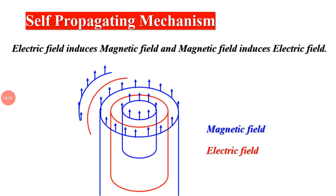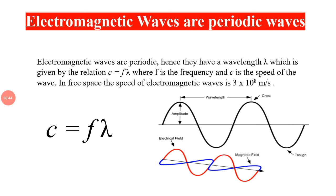So electromagnetic waves propagate forward, continuously producing each other — electric field producing magnetic field and magnetic field producing electric field. This is why it is called the self-propagating mechanism. Electromagnetic waves are periodic waves, meaning they repeat themselves after a specific interval. They possess all properties of waves. The equation c = fλ applies, and in space electromagnetic waves travel at the speed of light.